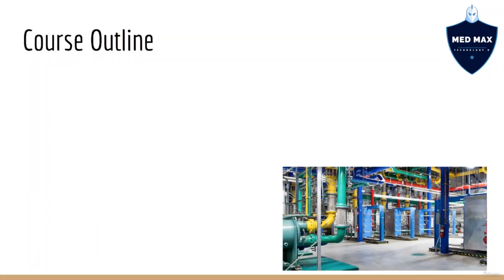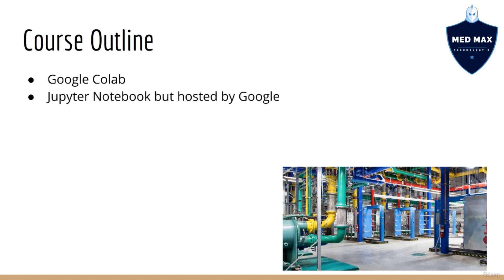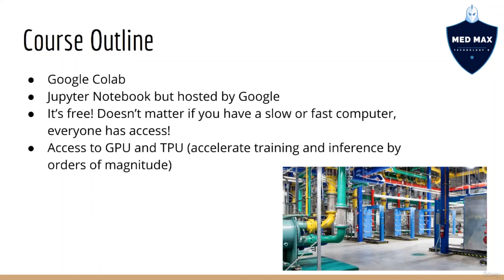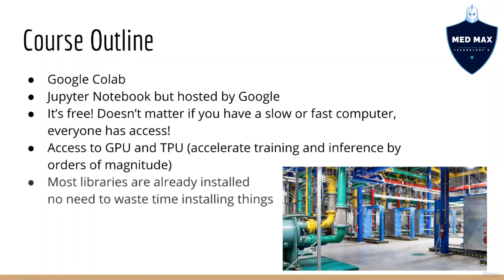So how is this course structured? First, before we even begin discussing deep learning, we are going to look at a new coding environment called Google Colab. Google Colab is basically Jupyter Notebook hosted by Google but with a lot more bells and whistles. It's hosted by Google so you don't have to use your own computing resources, it's free, it gives you free access to the GPU and TPU for orders-of-magnitude faster training and inference, and most of what we need is already installed.